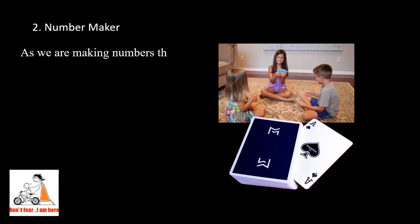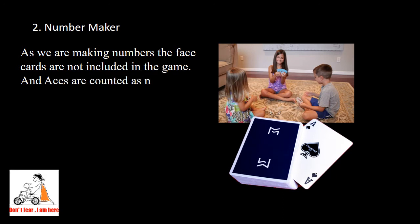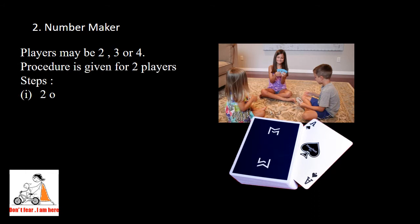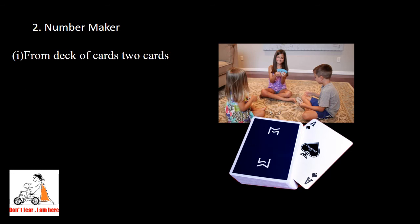Next is number maker game. As we are making numbers, the face cards are not included in this game, and aces are counted as number one, so we have numbers from one to ten. Players may be two, three, or four, but I am explaining the procedure for two players. From the deck of cards, give two cards to each player or let them take without seeing the numbers. The face will be down and distributed.